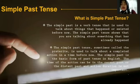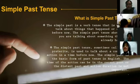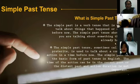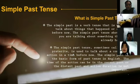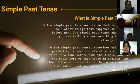Now, simple past tense. What is simple past tense? The simple past is a verb tense used to talk about things that happened or existed before now. The simple past tense shows that you are talking about something that has already happened. Sometimes called the preterite, it is used to talk about a completed action in a time before the present. The simple past is the basic form of past tense in English, and the duration of the action is not important.